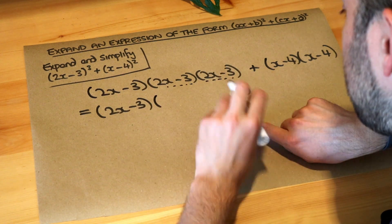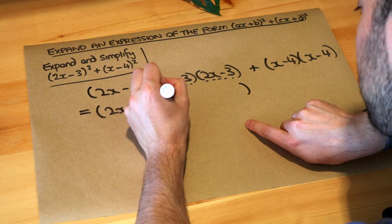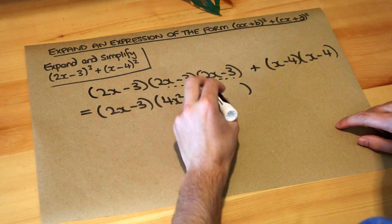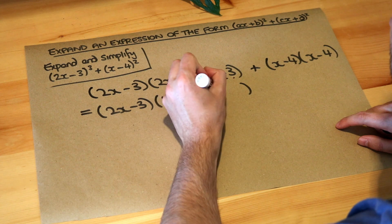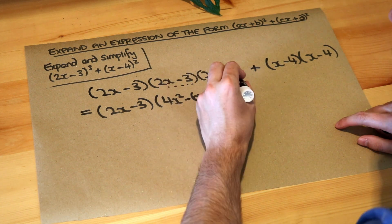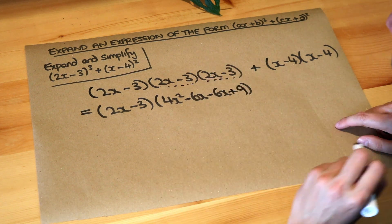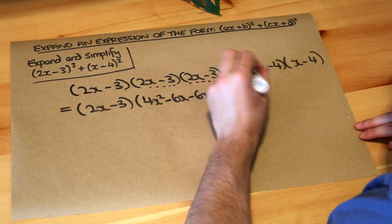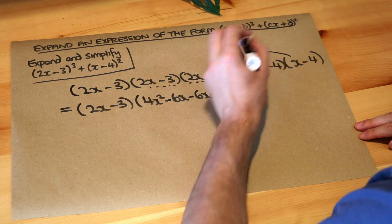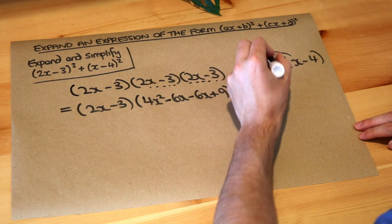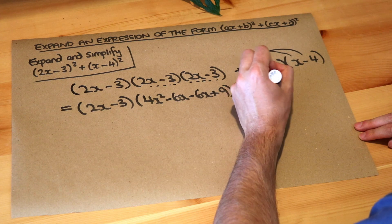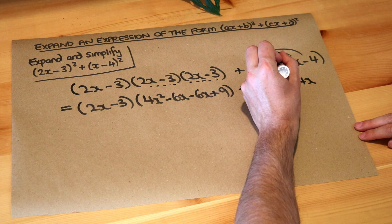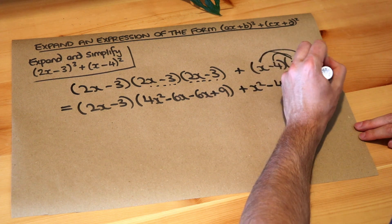So we put one big bracket: 2x times 2x is 4x², 2x times -3 is -6x, -3 times 2x is -6x, and -3 times -3 is +9. Let's do the same over here: x times x is x², x times -4 is -4x, -4 times x is -4x, and -4 times -4 is +16.